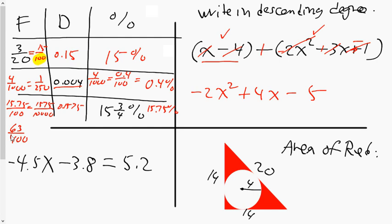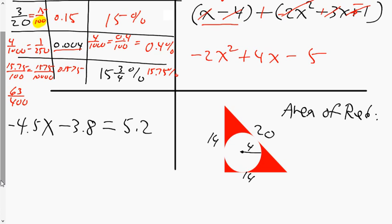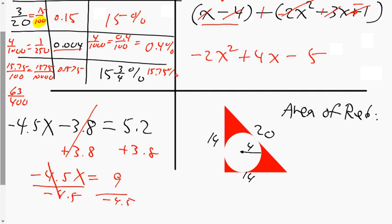Our third question gives us an algebra problem with decimals as constants and coefficients. First, we get rid of our constant by adding 3.8 to both sides, giving us -4.5x = 9. Then we divide both sides by the coefficient. x equals -2 as the solution. How many 4.5's are there in 9? Two. A positive divided by a negative is negative.